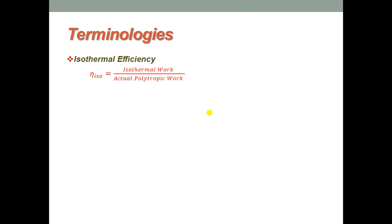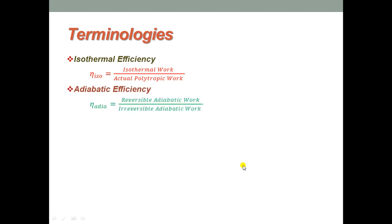Isothermal compression cannot be achieved in practice, but an attempt is made to approach the isothermal case by cooling the compressor, either by addition of cooling fins or water jackets. The second efficiency is adiabatic efficiency, defined as the ratio of work done in the compressor with reversible adiabatic compression to irreversible adiabatic work — mathematically, reversible adiabatic work over irreversible adiabatic work.